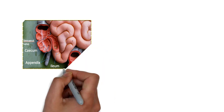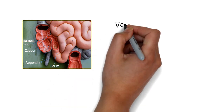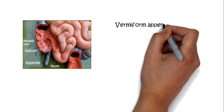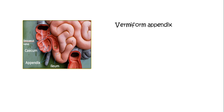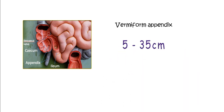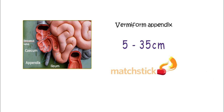The word 'appendix' is derived from the Latin term 'vermiform appendix.' Vermiform means worm-like, and appendix means something attached or a continuation. It is a muscular tubular structure arising from the cecum. Its length is variable, ranging from 5 to 35 centimeters with an average of 9 centimeters, and its diameter is 1 to 3 mm.